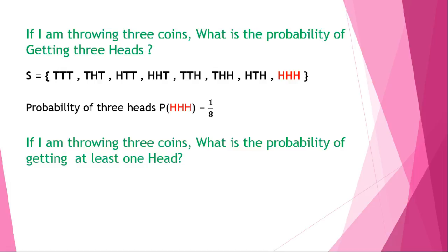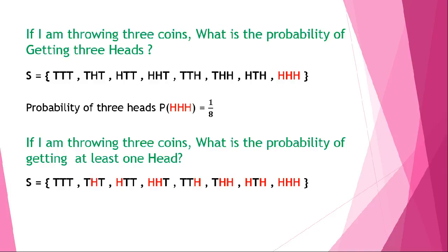One more question: if I am throwing three coins, what is the probability of getting at least one head? That means there should be a minimum of one head. Looking at the sample space of 8 elements, seven elements contain at least one head, and only TTT has no head. So the probability of getting at least one head is 7/8. Alternatively, this equals 1 − 1/8, since 1/8 is the probability of not getting any head.